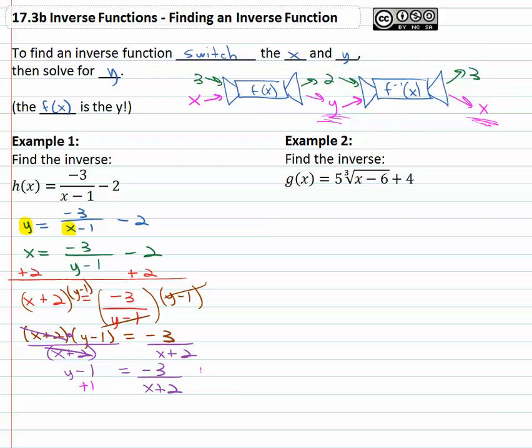And simply adding 1 to both sides, we'll get the y alone. y is equal to negative 3 over x plus 2 plus 1.